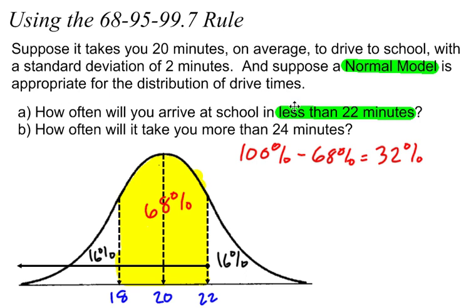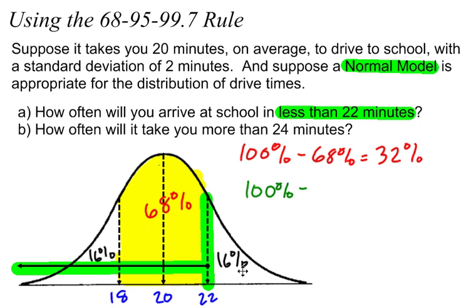How often will you arrive at school in less than 22 minutes? The percentage of the data that is less than 22 minutes — going in that direction — is going to be 100% minus this tail, which is 16%. And 100% minus 16 is 84%. So I will arrive at school in less than 22 minutes about 84% of the time, because 84% of my data is below 22 minutes, which is one standard deviation above the mean.